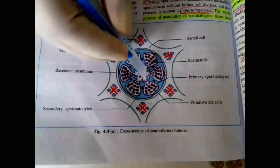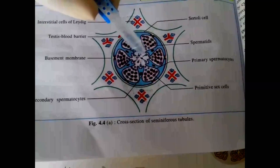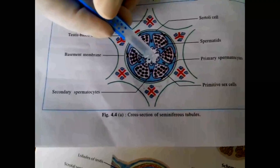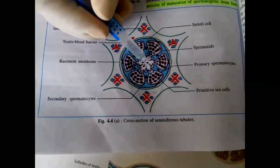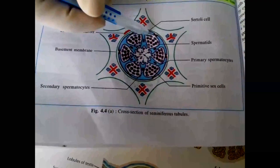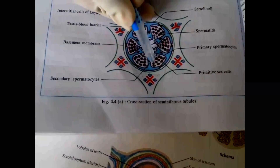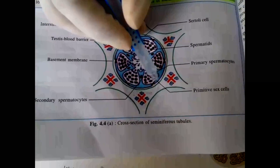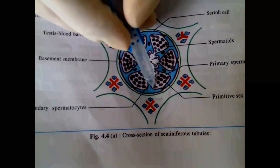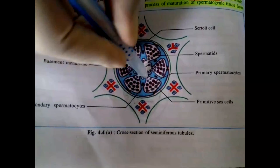After puberty, sperm production begins. The sperm antigen is not recognized by the body, so the blood-testis barrier prevents the plasma cells from forming anti-spermatic antibodies, which would cause infertility. The spermatogenic cells are arranged in zones: the outer zone is spermatogonia, the intermediate zone is primary and secondary spermatocytes, and the inner zone is spermatids.